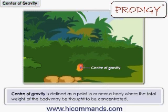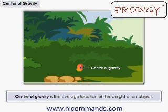Center of gravity is defined as a point in or near a body where the total weight of the body may be thought to be concentrated. In other words, center of gravity is the average location of the weight of an object. It is independent of the position of the object.